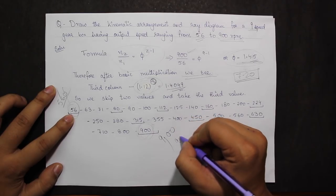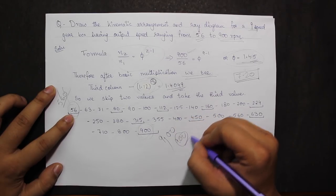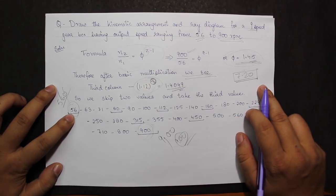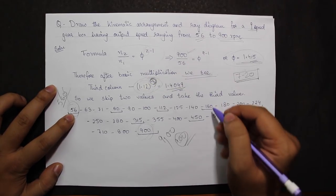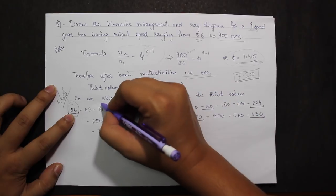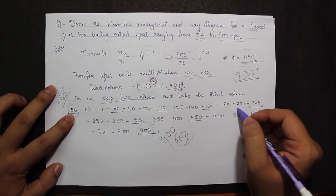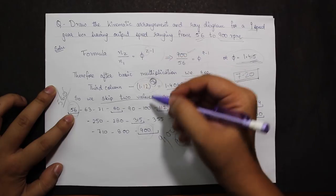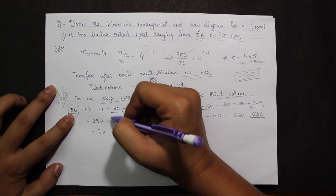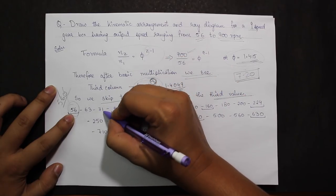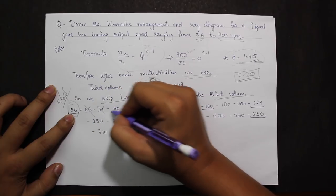Here I have had a cube of 1.12, therefore I will be skipping two values and taking the third value. So after 56, my next value is 63, then 71. I will be skipping these two and then taking value 80.